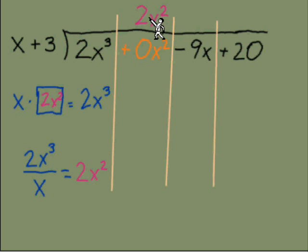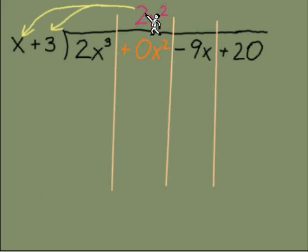As soon as a term goes up on top, next move is multiply back down. We're going to do it twice: 2x² times the x and 2x² times the positive 3. That's going to give us this 2x³ and a positive 6x². Next move is subtract, and I advocate that we're going to flip signs and add just to keep that's what keeps me on track.